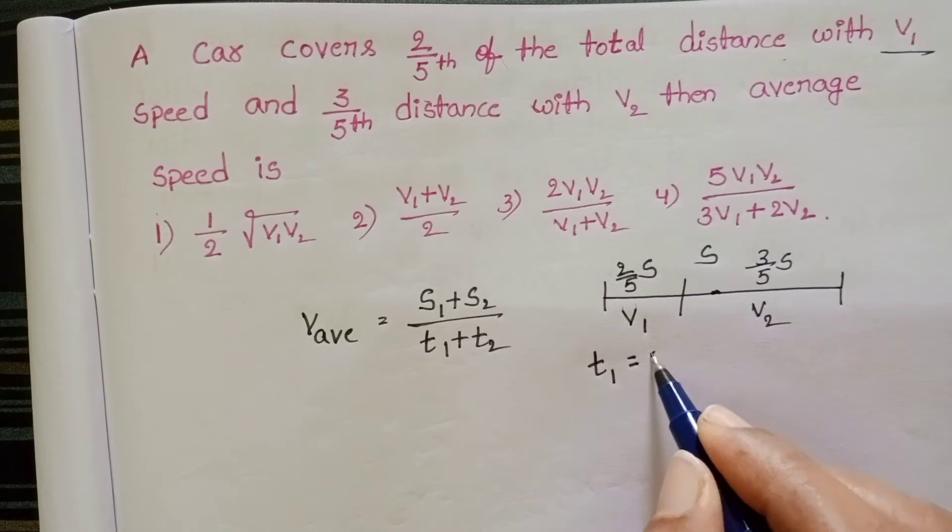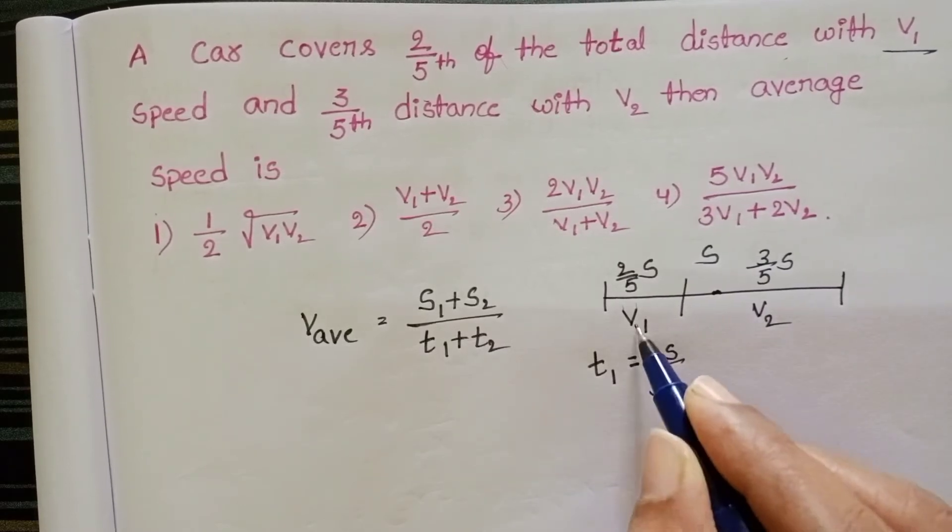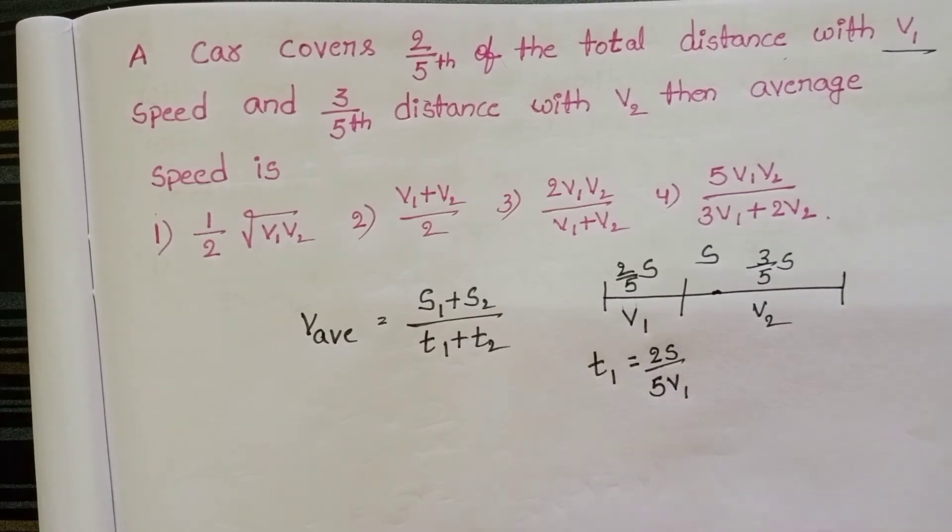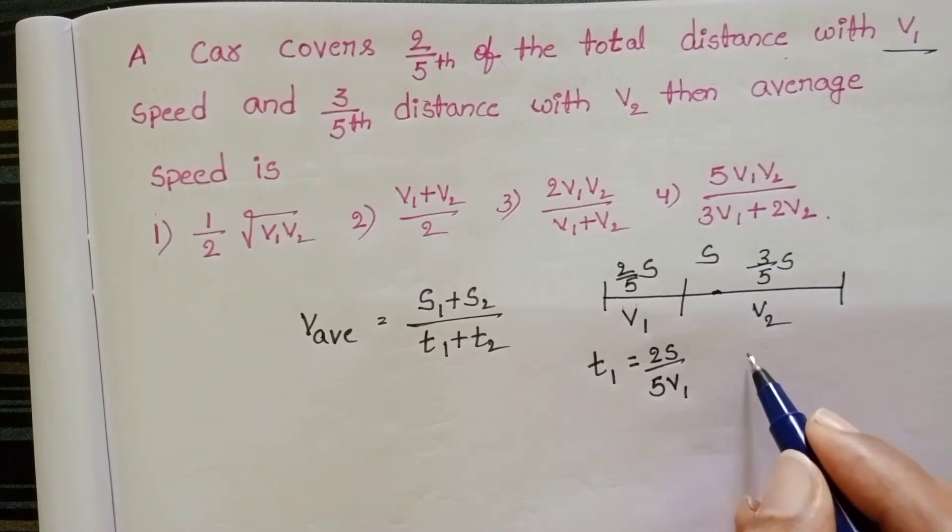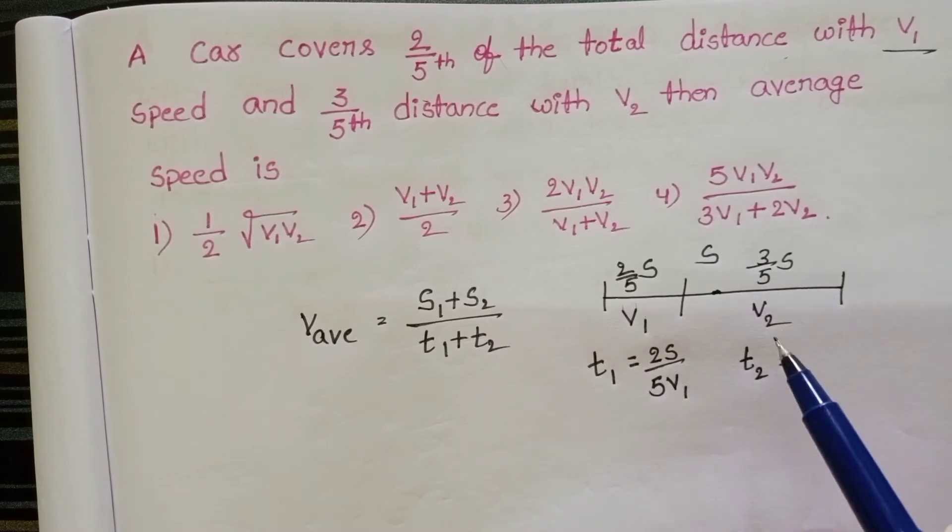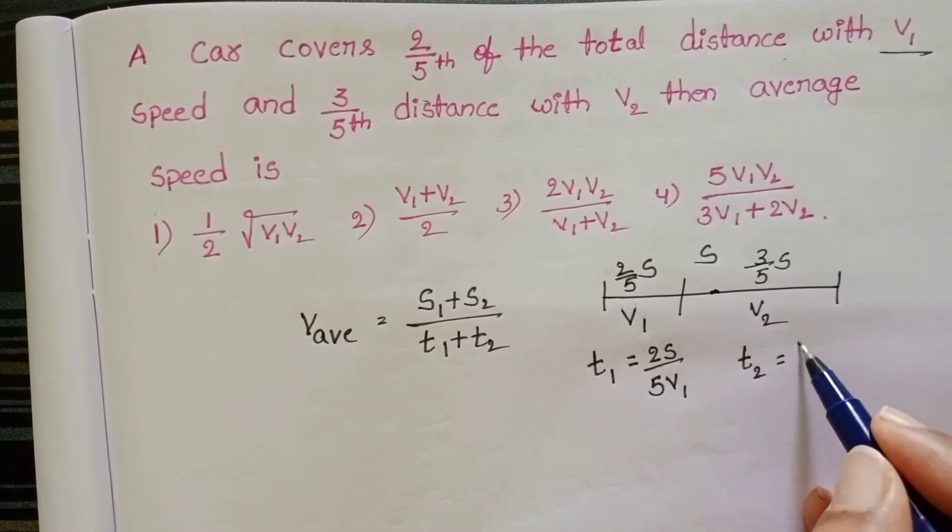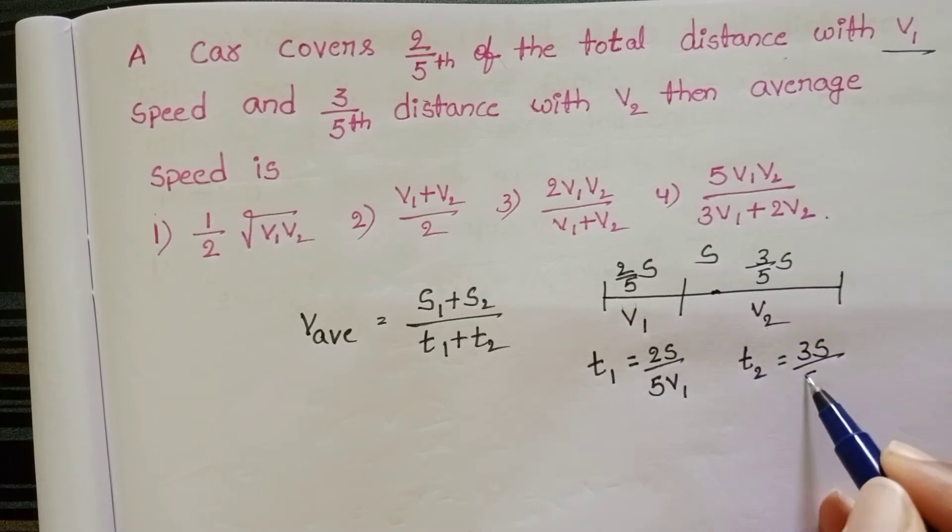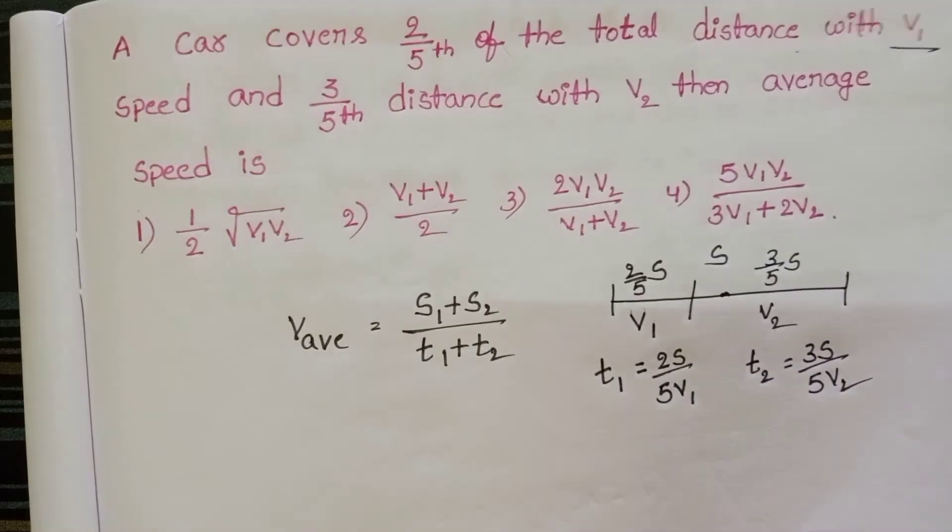Here distance is 2S by 5 and speed is V1. So T1 equals 2S by 5V1, and T2 equals distance 3S by 5 and speed is V2, so 3S by 5V2.